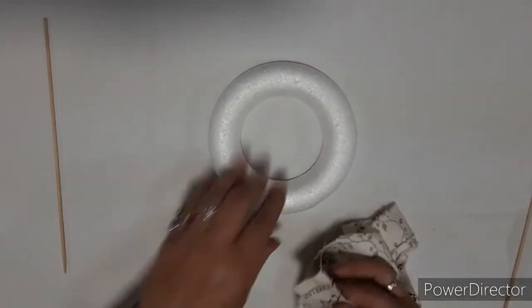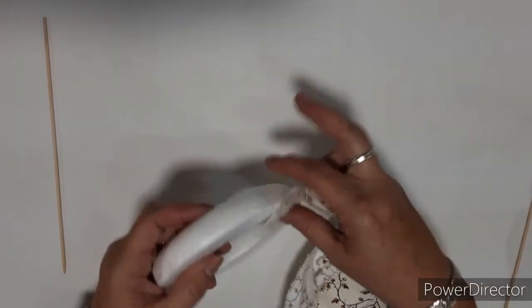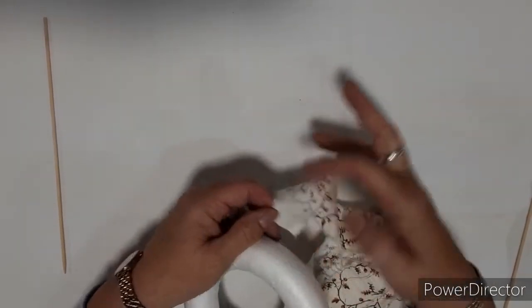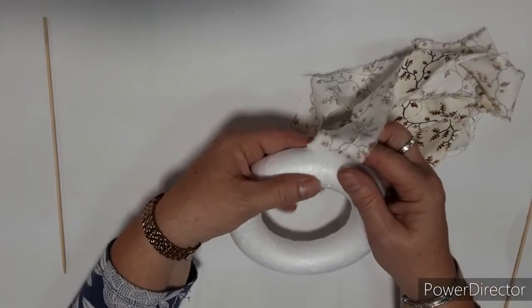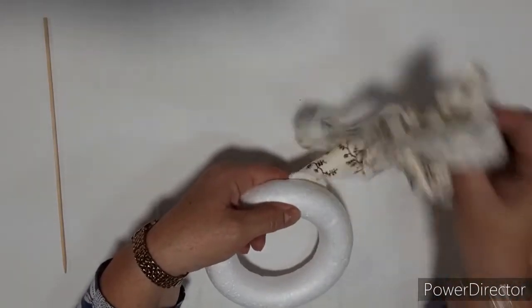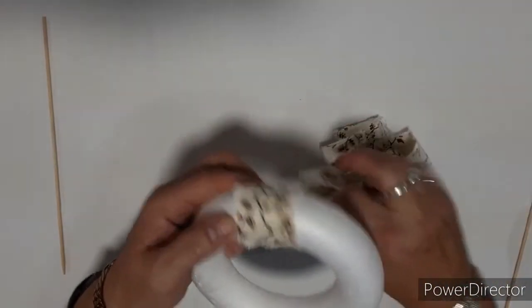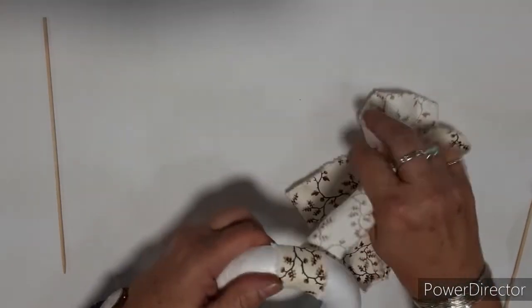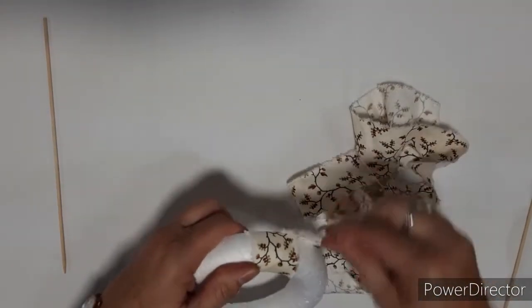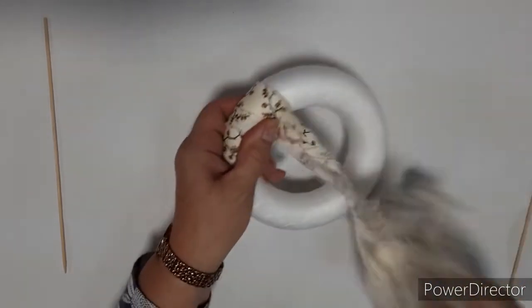Start off taking the end, we're going to pop that to the back of the polystyrene ring, secure it with your finger and then gently wrap around the strip of the material. You're going to put your finger there and overlap the edges so that you're covering all of the polystyrene ring.